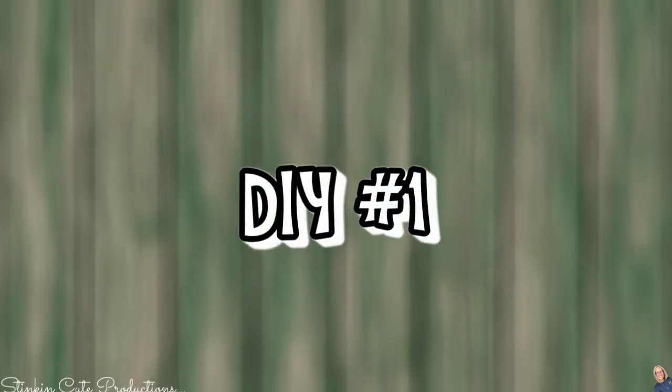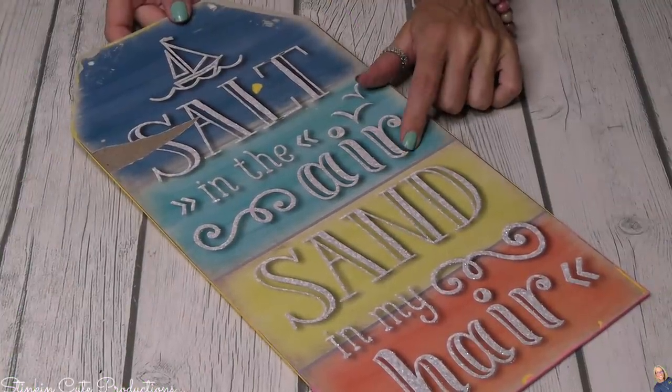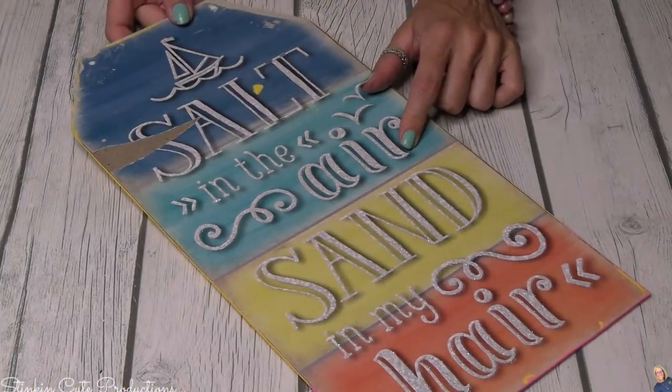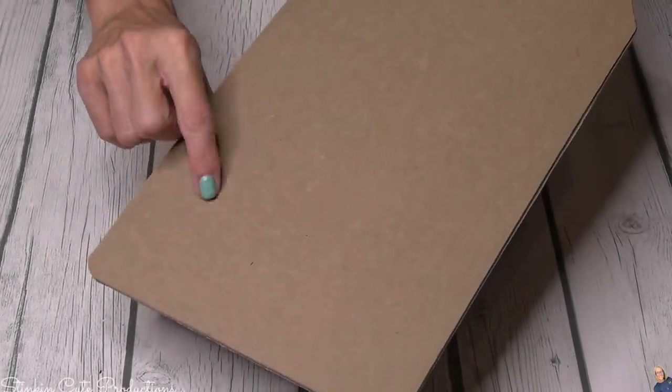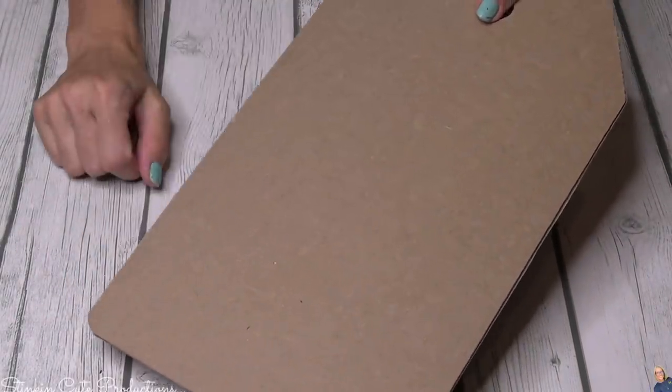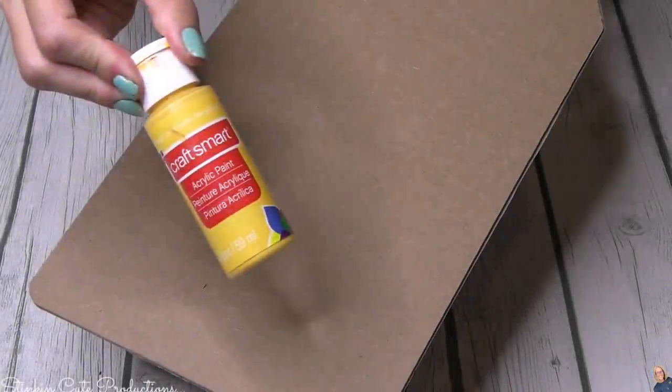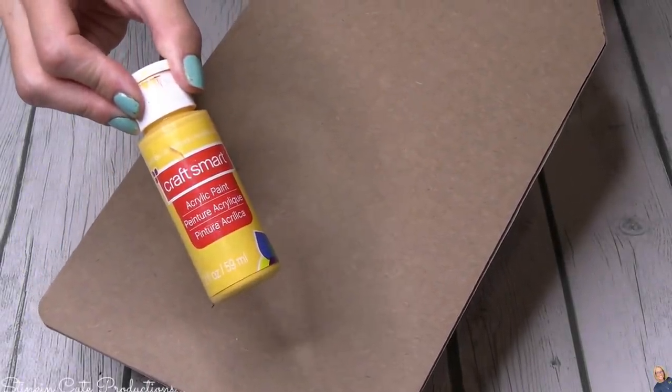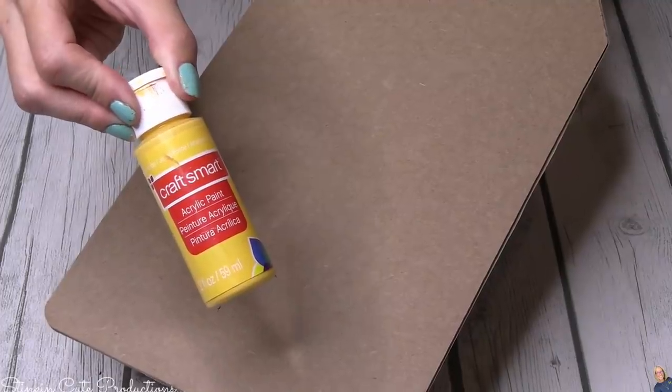Alrighty, getting started with this first fun DIY. This is one any teacher is guaranteed to love. For this first DIY you're gonna need two of these plaques that you can get at Dollar Tree, and this shape is a must. What's great is on the back side you've got a blank canvas. I'm gonna start off by using this yellow paint by Craftsmart. This is one that I got at Michaels.